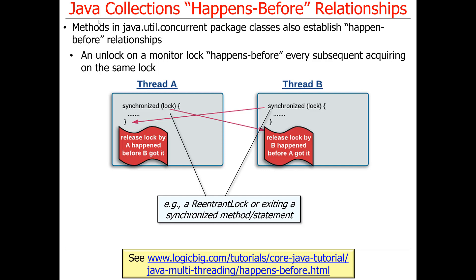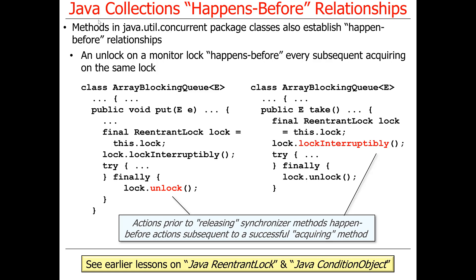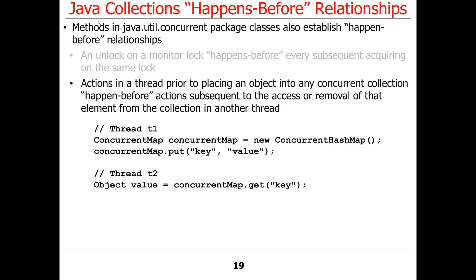Here we have two threads, thread A and thread B. I'm using synchronized statements, but the same would be true with synchronized methods or ReentrantLock. If you release the lock in thread A, that has to happen-before thread B is able to acquire the lock. If you think about our ArrayBlockingQueue from the Java ReentrantLock and condition object lessons, we had put and take methods. For put, we finish all the work and then unlock the lock, which ensures data is properly synchronized so that take can only acquire the lock after the unlock is finished and information is pushed out to the caches.